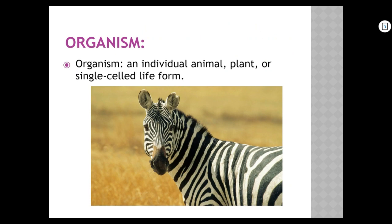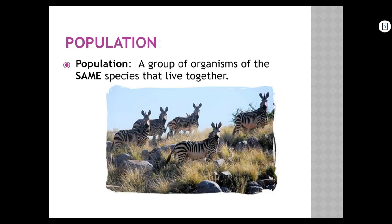An organism is just an individual animal, plant, or single-cell life form — any living thing on its own. A population is a group of organisms of the same species that live together. Here you see zebras — this is a population of zebras living in the same area. Species means they can have babies with each other and those babies can reproduce. A zonkey — a mix between a zebra and a donkey — is sterile and cannot reproduce.